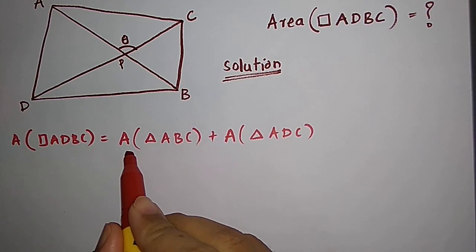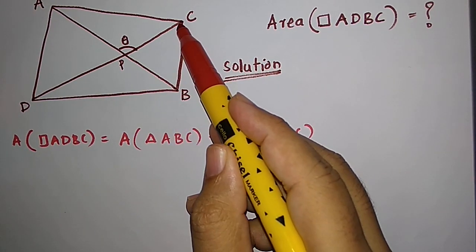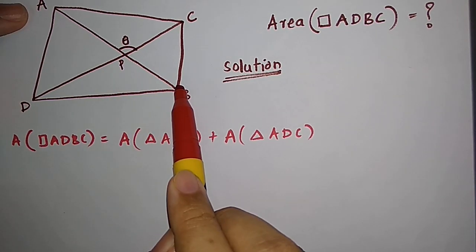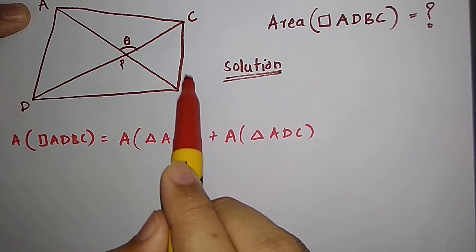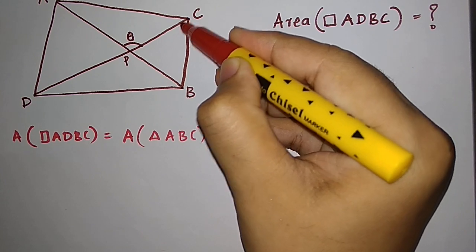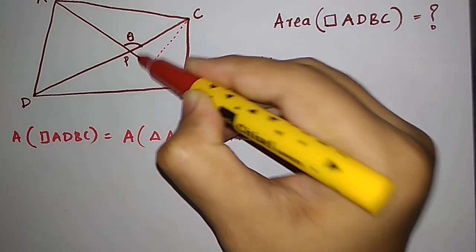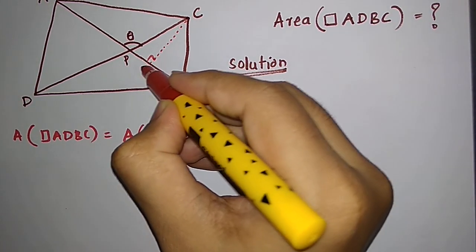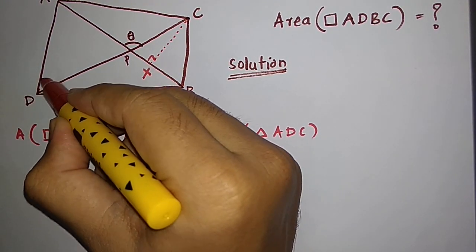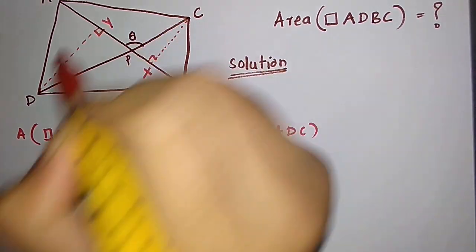Now, to find the area of triangle ABC, we must know the height of this triangle. We have the diagonal AB as the base of triangle ABC. So what we do is draw a perpendicular onto AB from C — let's call this point X — and also draw a perpendicular from D onto AB, and let's call this point Y.